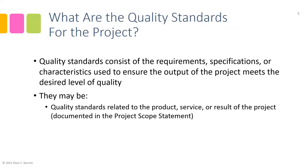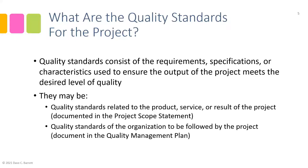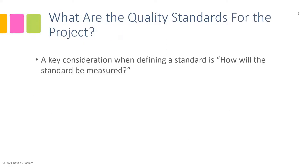All of the specifications and characteristics that came out of stakeholder requirements in the project scope statement are standards that we need to meet. Whatever we define in the project scope statement are in effect quality standards as well — you can see how scope and quality are very much linked. For example, if this is a physical product and it needs to be of certain dimensions, those are the standards we need to meet. Additionally, quality standards of the organization — related to processes and how we do things — are documented in the quality management plan.